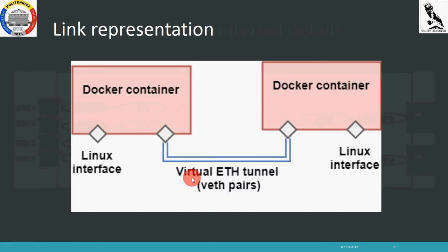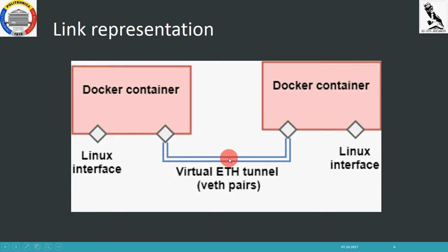The link between two simulated devices is done through virtual ethernet tunnels or virtual ethernet pairs. This has the advantage that we can pass traffic between the Docker containers.